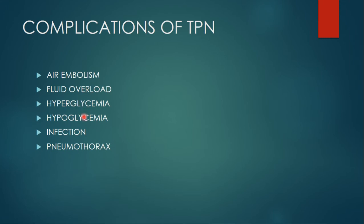Then there is hypoglycemia. Hypo means low, glycemia means sugar or glucose, and -emia means blood. So hypoglycemia means low blood sugar — a condition in which the blood sugar or glucose level is lower than the standard range, like below 70 mg per deciliter.